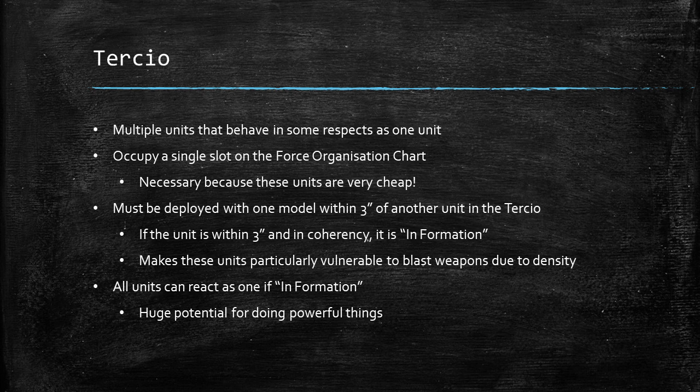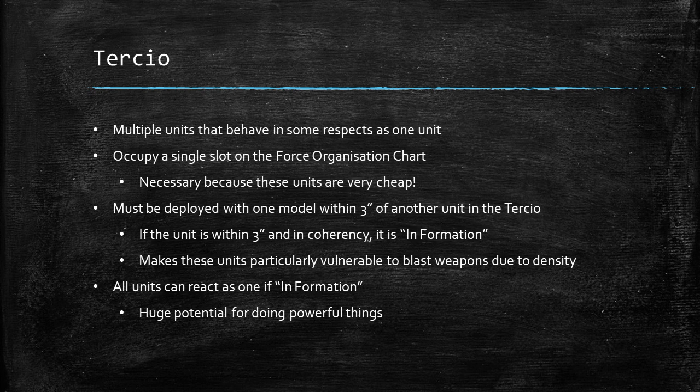You might take a command unit and two units of infantry and they count as one tertio. You deploy them as one unit, and they've got to be deployed so one model from each unit is within three inches of another unit in the tertio. If they are within three inches during the game they count as being in formation, which does some things we'll talk about later. In theory these units can string out fairly far apart as long as a couple of models are close.